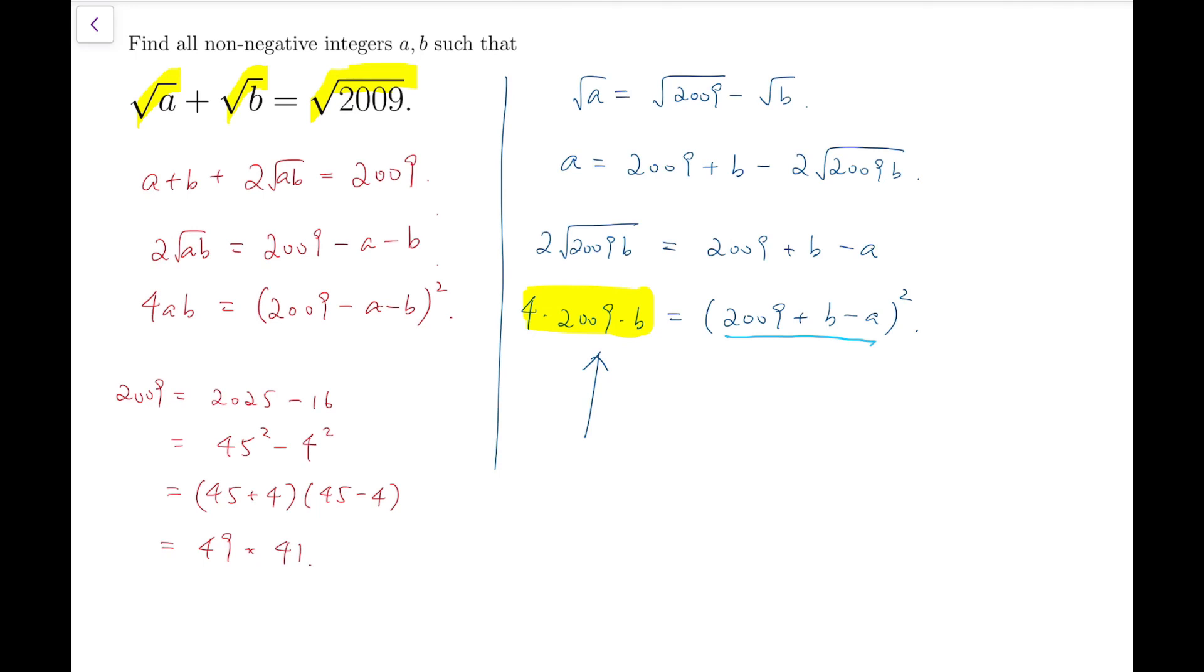So that means I can further simplify this to be 2 squared times 7 squared times 41b, which equals to (2009 plus b minus a) whole squared. And that means 41b, just this part, also has to be a perfect square.